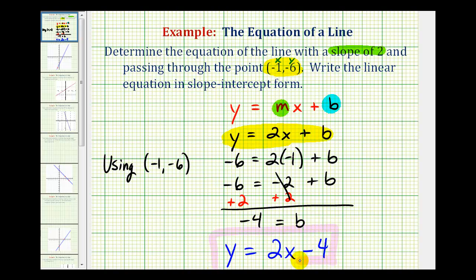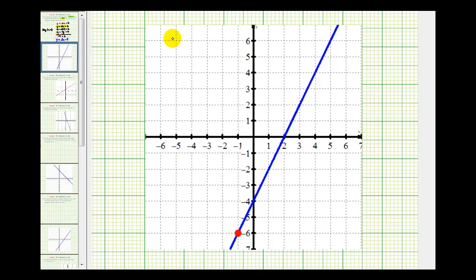And we'll go ahead and verify this graphically. We just found the equation y equals two x minus four, given the slope of the line was two, which we can write as two over one. And the line also contained the point negative one, negative six.